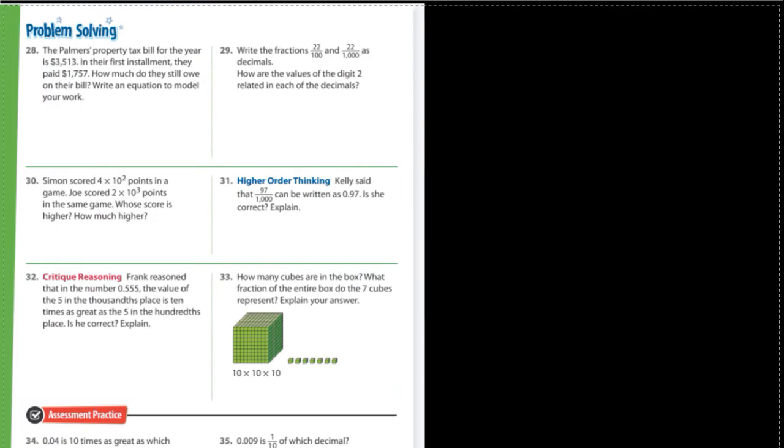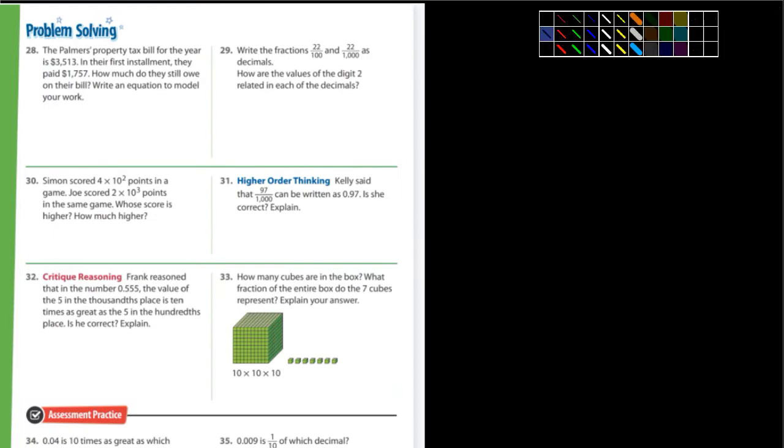I'm going to drop down to the next page. And let's take a look at some of these. It says the Palmer's property tax bill for the year is $3,513. In their first installment, they pay $1,757. How much do they still owe on their bill? Well, we're talking about a simple subtraction problem. It says write an equation to model your work.